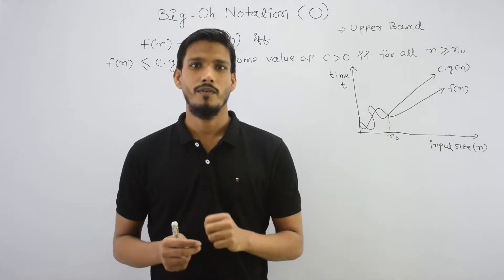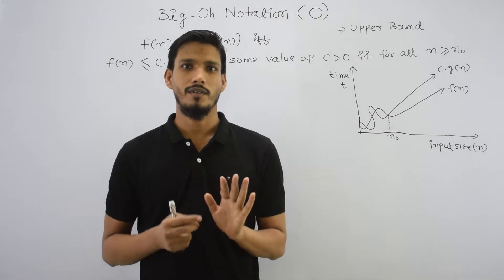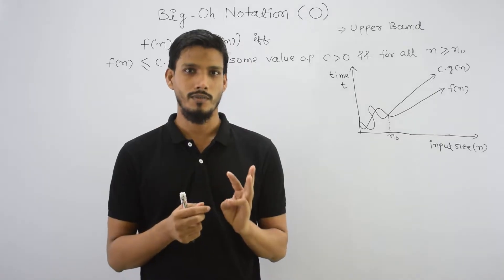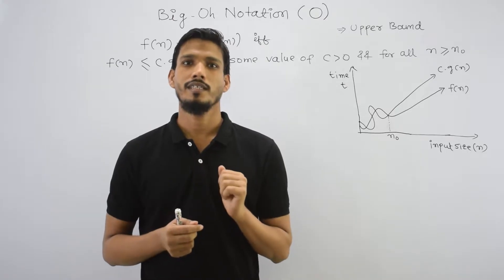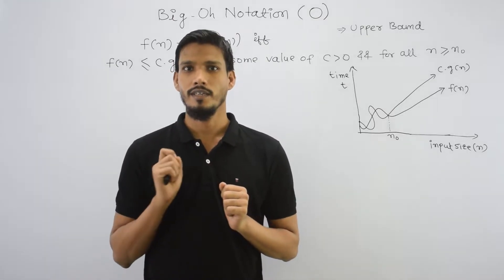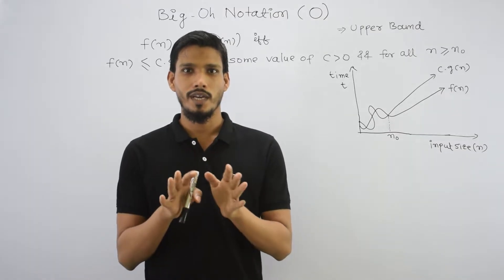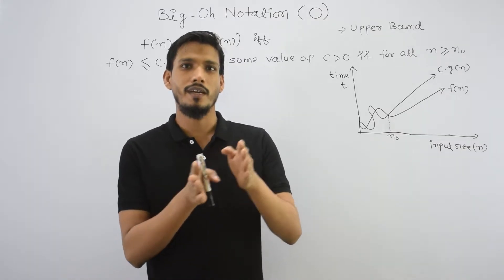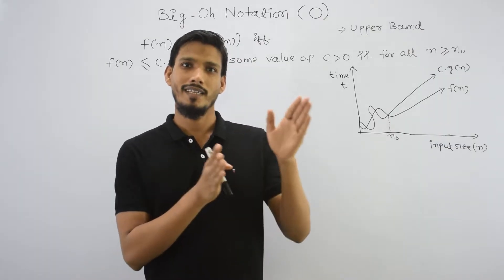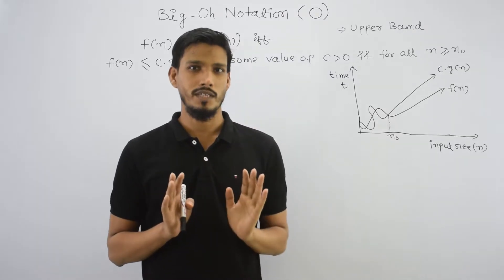Hello everyone. We will discuss today's video about asymptotic notation. There are 5 types of notation: Big O, Omega, Theta, small O, and small Omega. This is a very important topic from the exam — at least one question every year. There is a sequence to this topic, and by the end you will have a complete idea and be able to solve all kinds of questions.